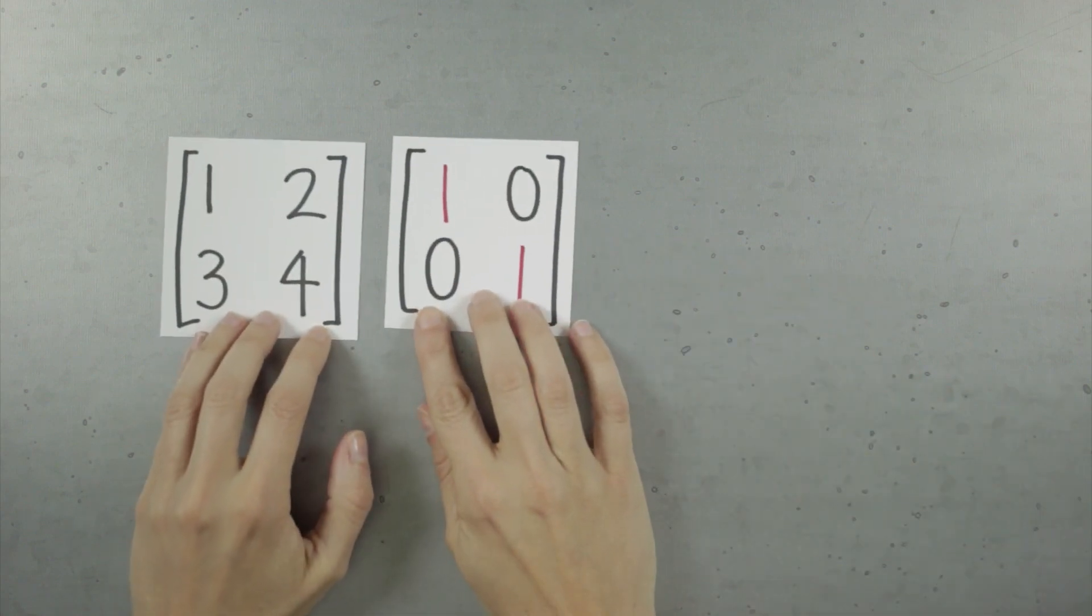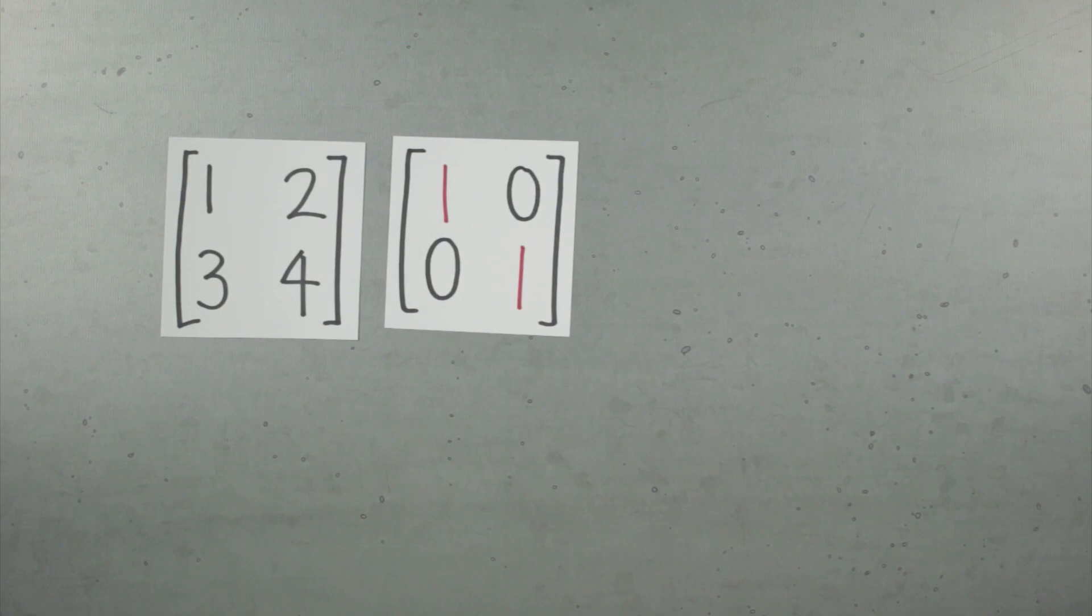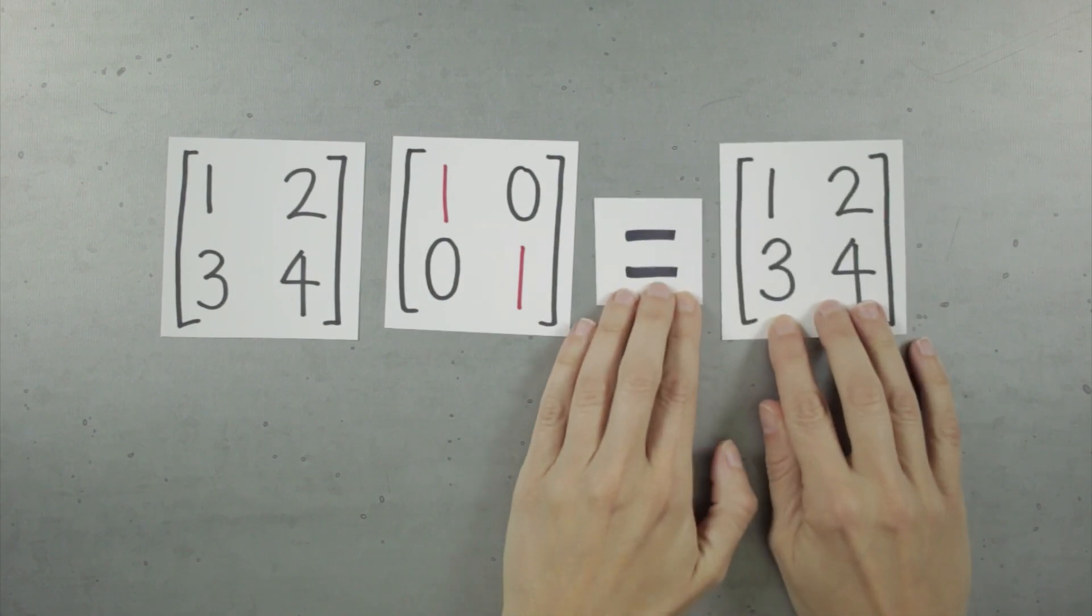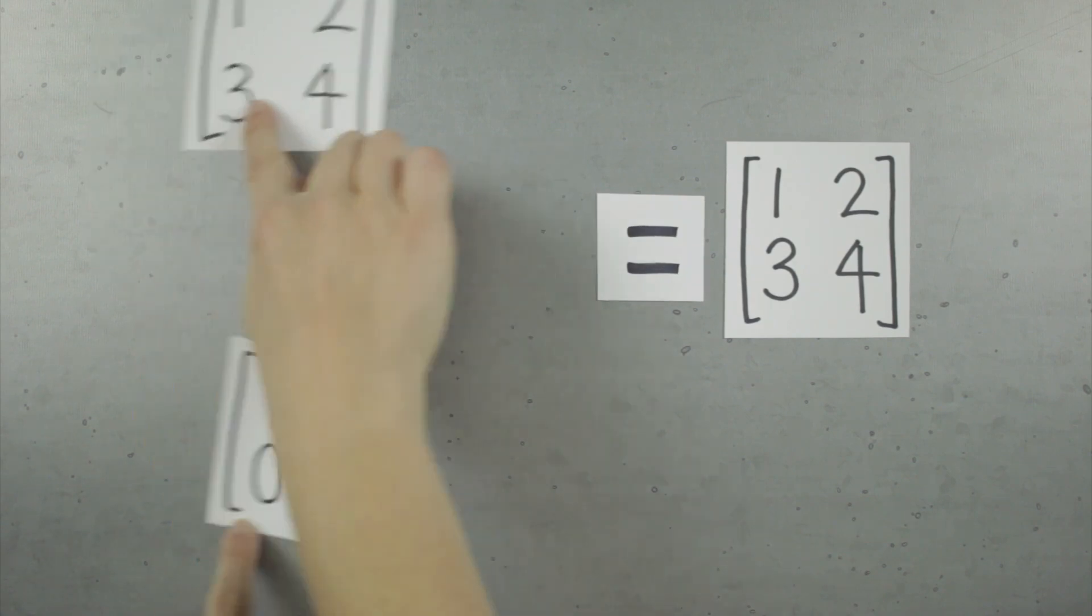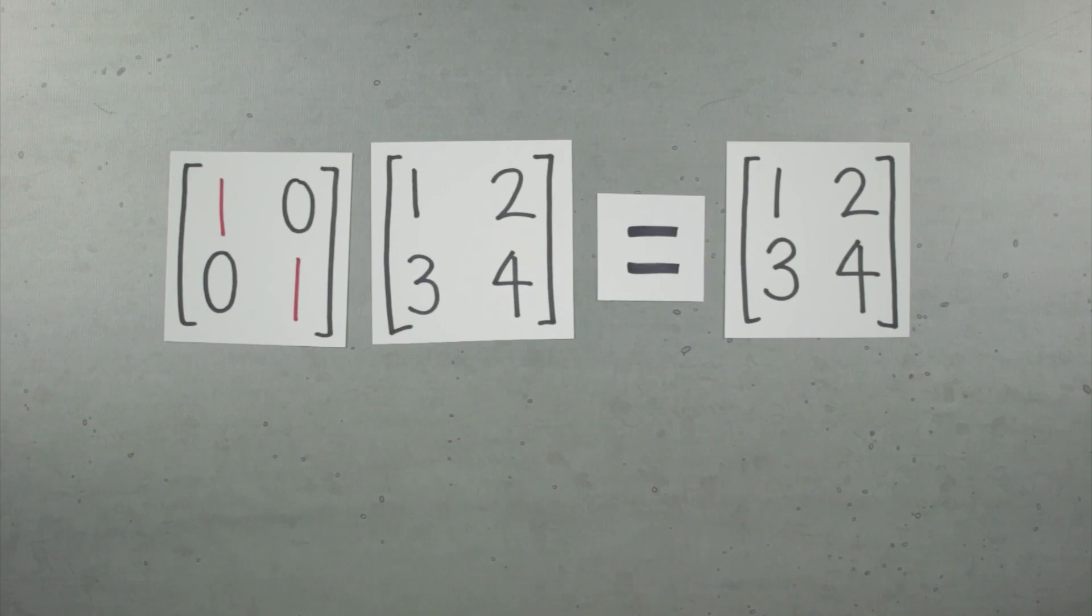Identity matrices are special because when we multiply a matrix by an identity matrix, we don't change the value of the original matrix. Just like multiplying a real number by 1 doesn't change the value of the real number. Because the identity matrix is like multiplying by 1, it means the identity matrix can come first or second in the multiplication, and the result will still be this original matrix.